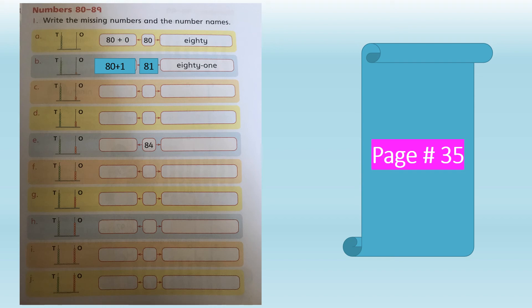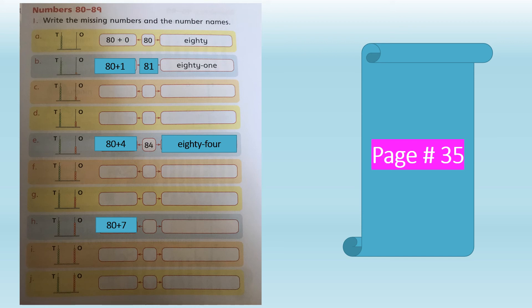Write the missing numbers and number names in parts C and D. In part E you can see 4 beads on the ones rod and 8 beads on the tens rod. 8 tens make 80 and 4 ones make 84. The number name is E-I-G-H-T-Y, hyphen or space, F-O-U-R — eighty-four, 84. Do parts F and G in the same manner. In part H, 7 beads of ones and 8 beads of tens are on the abacus — 80 plus 7 makes 87. The number name is E-I-G-H-T-Y, hyphen, S-E-V-E-N — eighty-seven, 87.